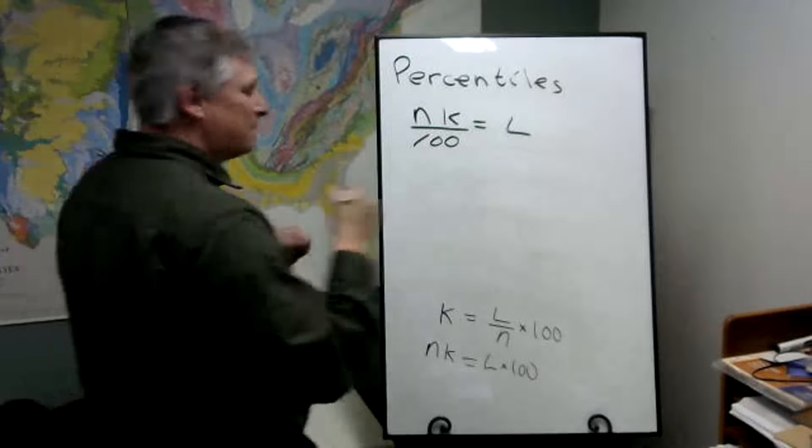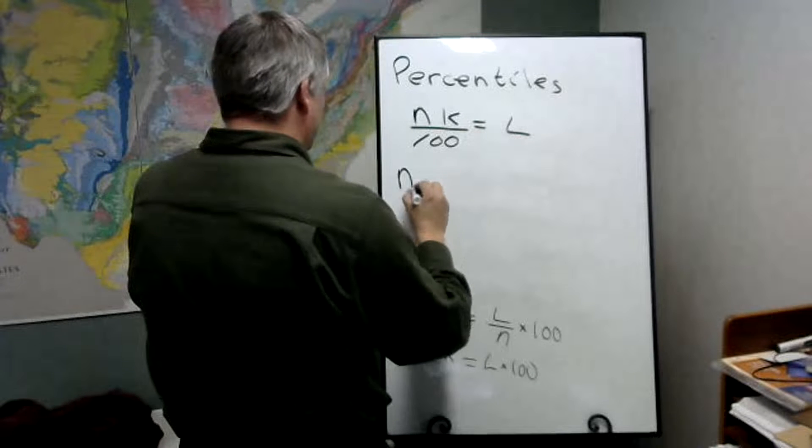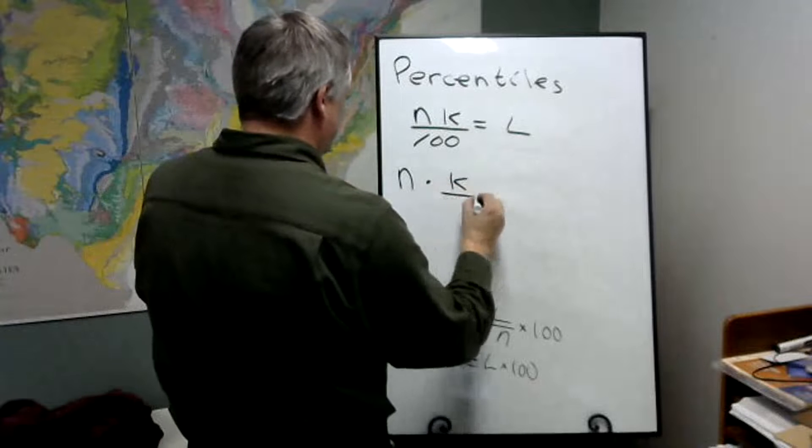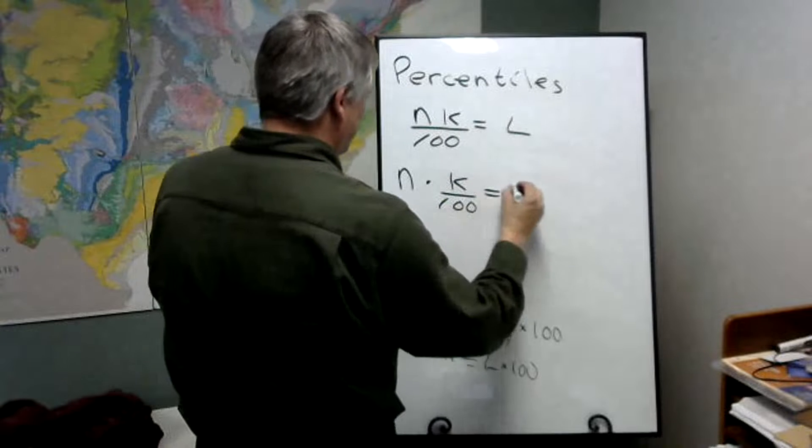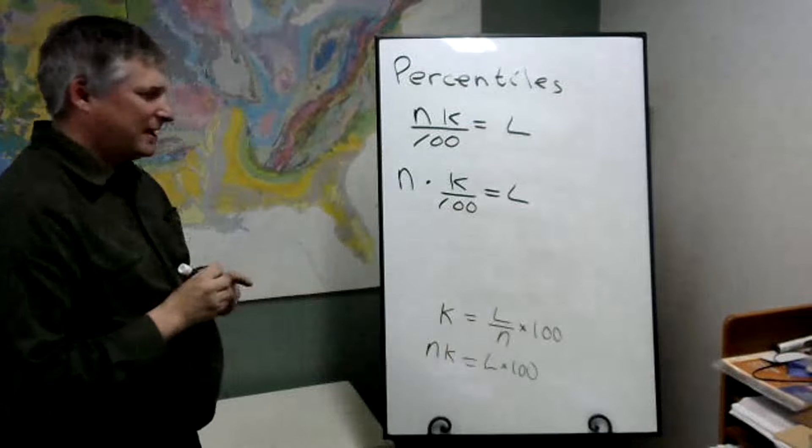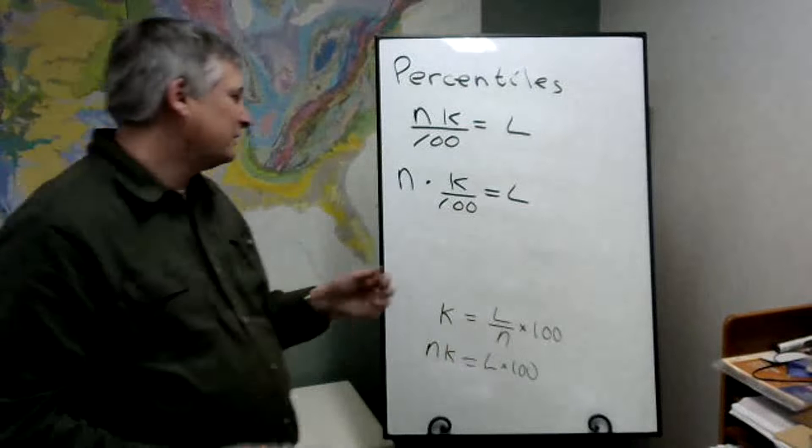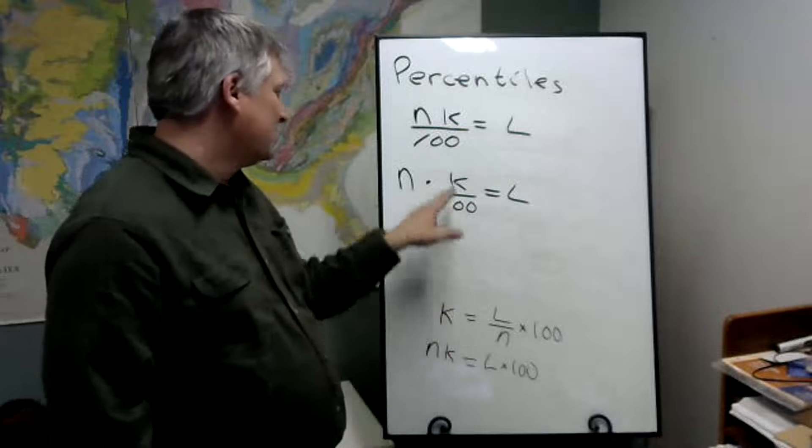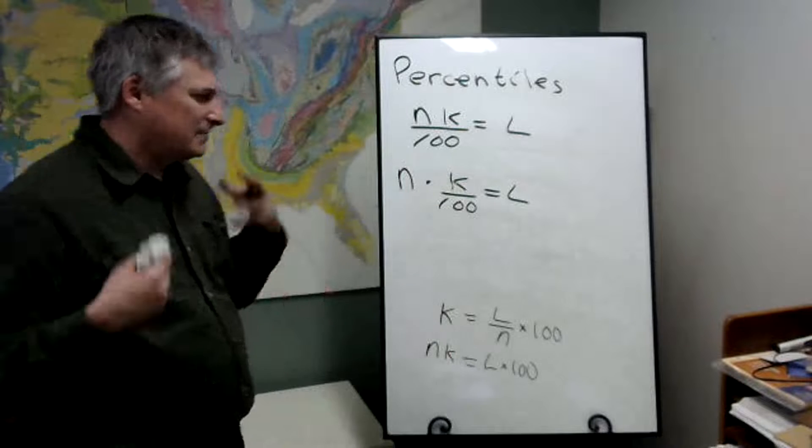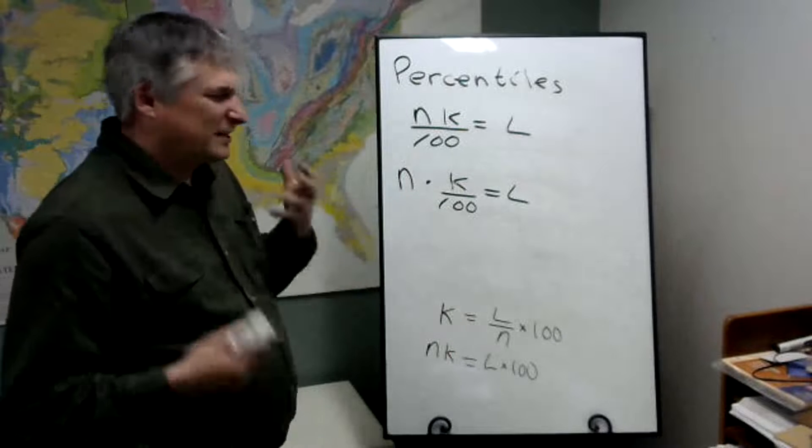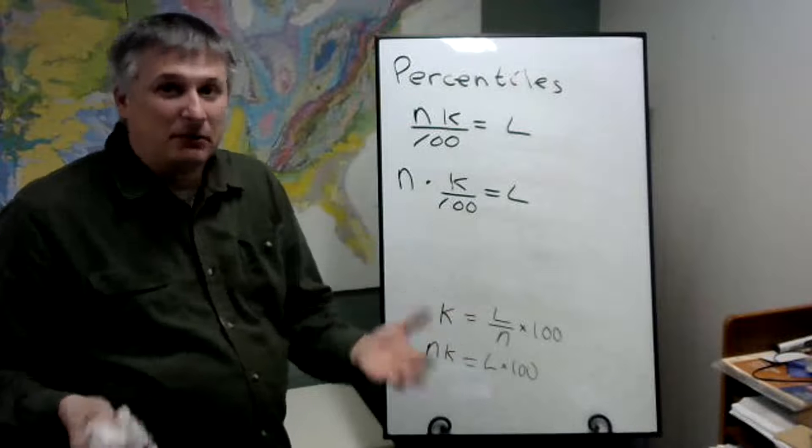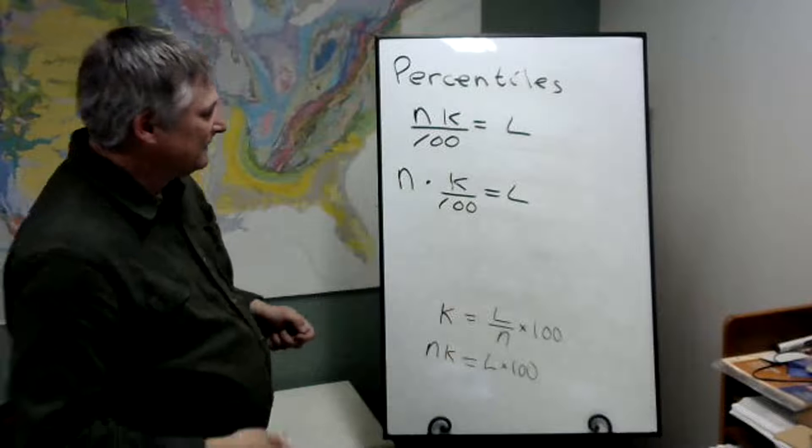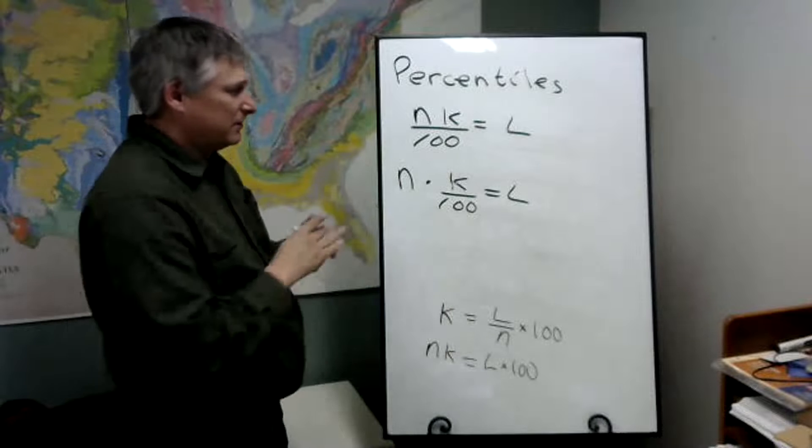And the way you could kind of think of it, and this might be more intuitive: here's our total number times K over 100. So if we're looking at the 50th percentile, let's say you have 50 over 100, that's 0.5. 0.5 times N is going to be half of N. So that kind of gives you an idea of the location for where 50% of the data is above or below. But this is the formula we're going to use.